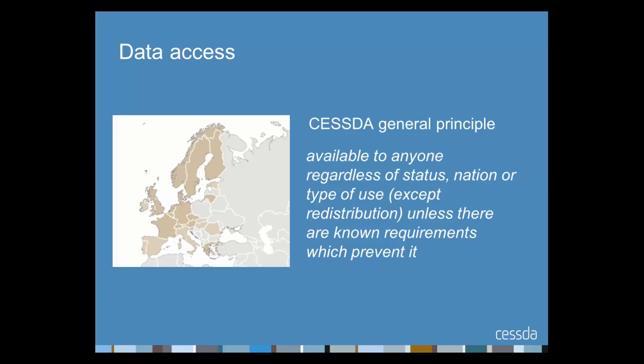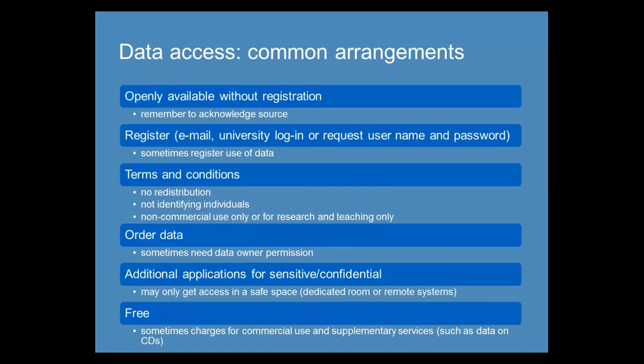Having found data, what do you do to get it? A general principle within CESSDA is that all data holdings will be available to anyone regardless of status, nation or type of use, except when redistributing or where other known requirements prevent it. In practice, you will generally find that you can access most data collections following a fairly simple registration process. However, access arrangements vary across data services and across different data collections. The differences largely reflect the needs of those who own the data, and protecting the anonymity of research participants is an important factor.